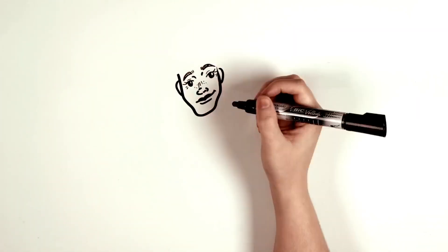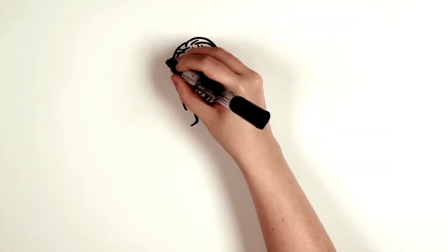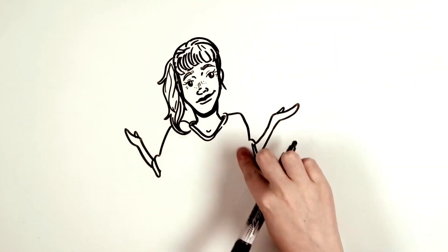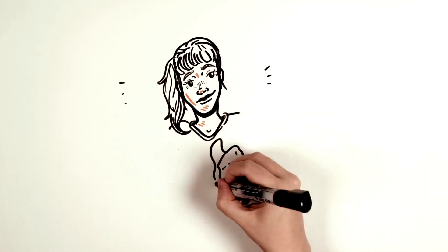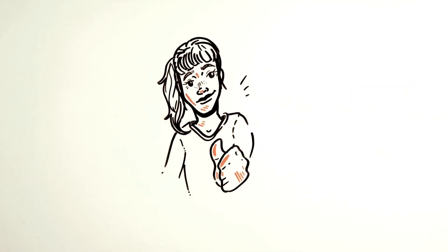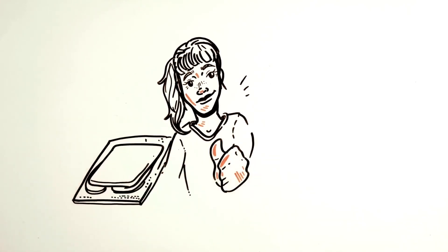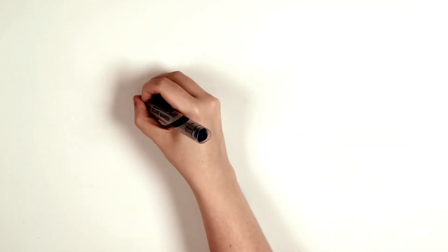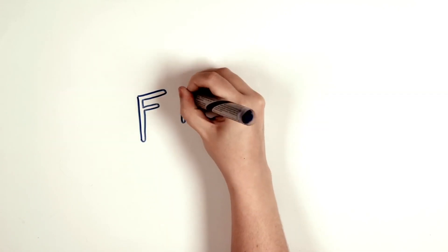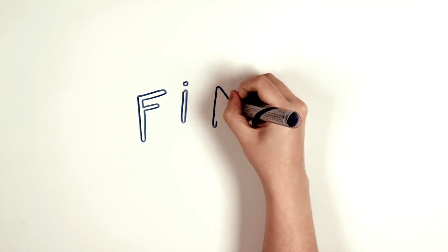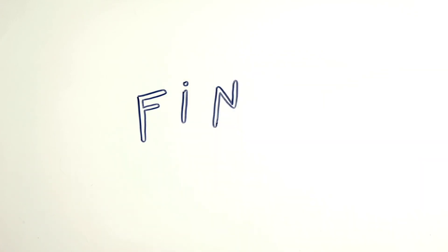There are many options and combinations with other components, but there is a key question that will guide you whenever you want to change your computer: what do I need it for? If we can answer that question, the rest should come as a piece of cake. And remember, whatever you choose, choose an Intel processor. Do you plan to get a new computer? Leave us a comment if this video has helped you in any way, and don't forget to give it a thumbs up. Subscribe and activate the bell to be aware of all our future content. See you in the next video!